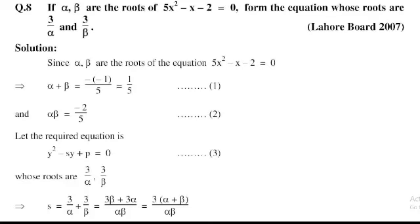If alpha and beta are the roots of 5x² − x − 2 = 0, form the equation whose roots are 3/alpha and 3/beta.